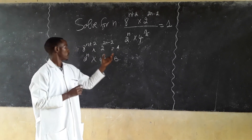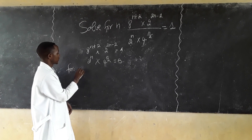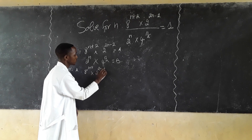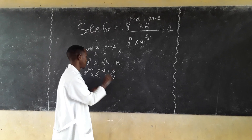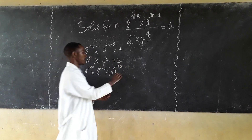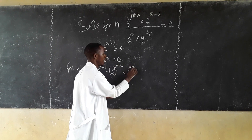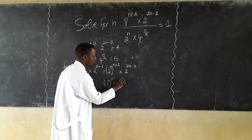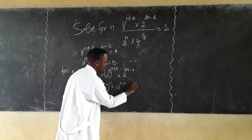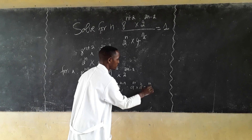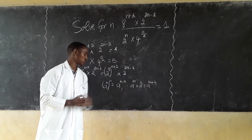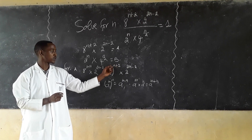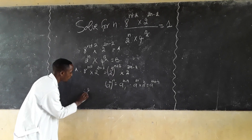How to solve H? For H, we have 8 power n plus 2 times 2 power 2n minus 2. This equals 2 power 3 times n plus 2, times 2 power 2n minus 2. Remember that a power n times n equals a power n multiplied by n, and a power n times a power m equals a power n plus m. So 2 power 3 times (n plus 2) equals 2 power 6n, giving us 2 power 6n.